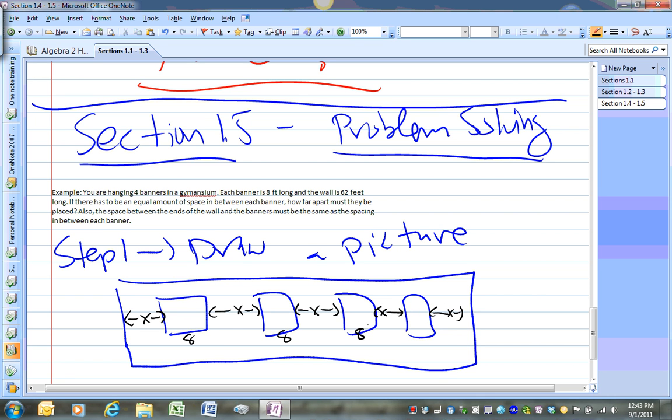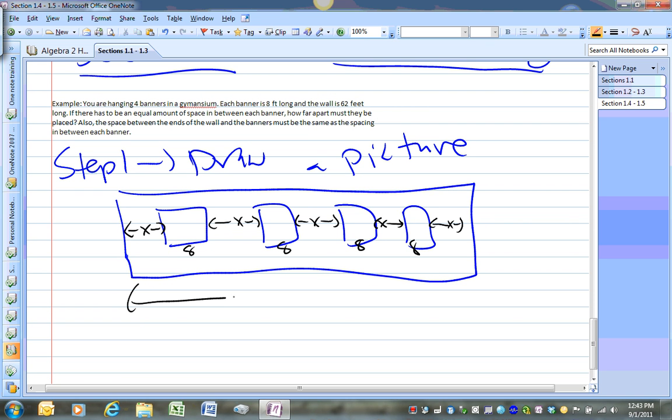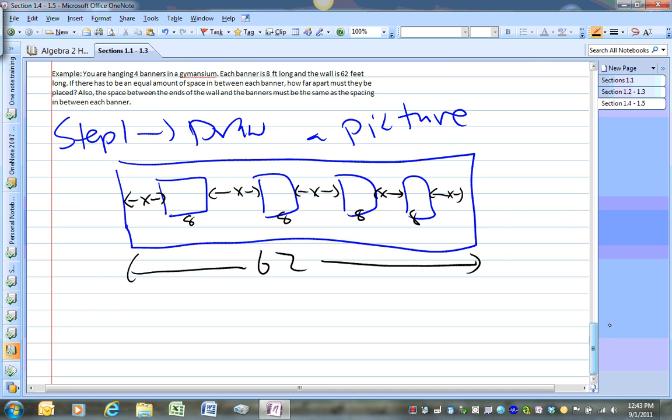Each of these are 8, 8, 8, 8, and the whole thing is going to be 62. All right. So hopefully you can see how to create the equation. That's going to be step 2.